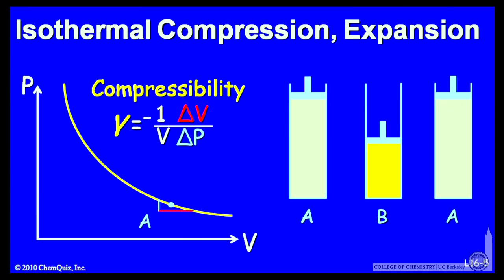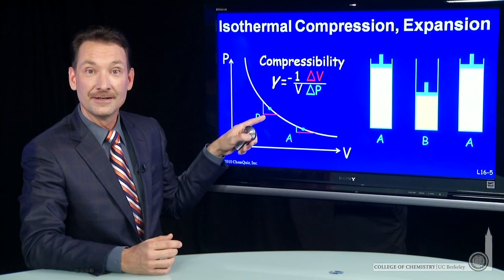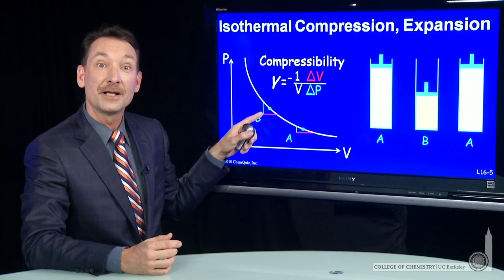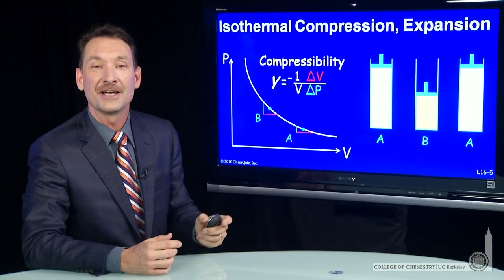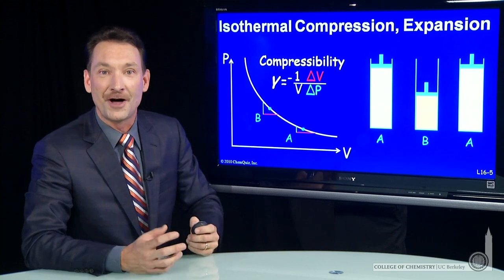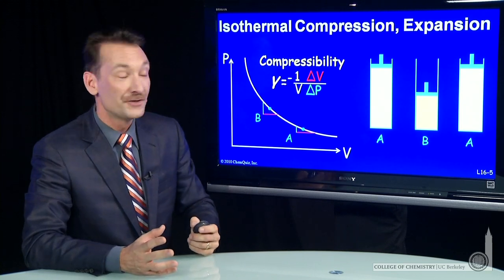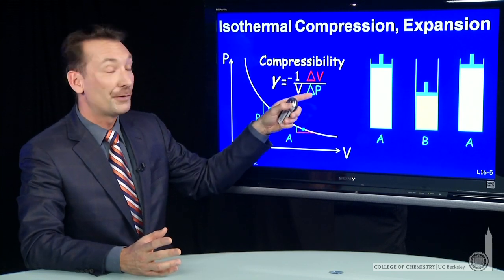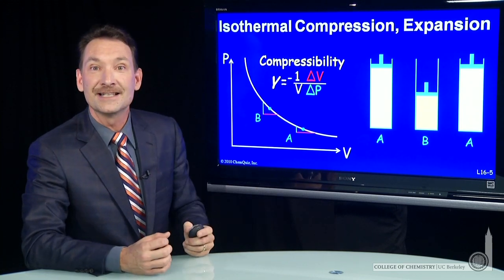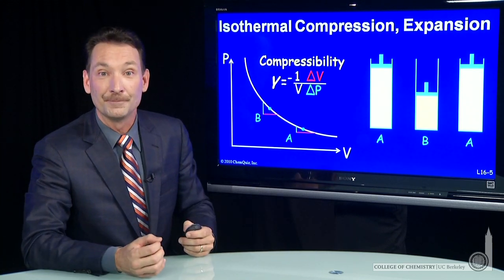As you go to lower volume, let's look at another point B. Here's a lower volume of gas. Now, when I compress this gas, it'll take a larger pressure change to make a change in the volume there, so the compressibility is slightly lower.